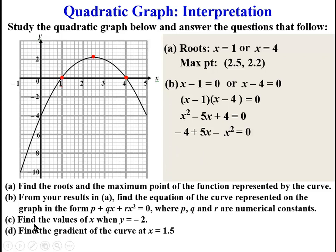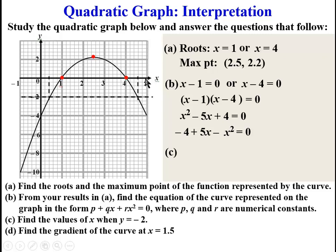So now we go to C: find the values of X when Y is negative 2. We go to the graph — this is Y equals negative 2. We draw a broken line there and find the point of intersection of the curve and the line Y equals negative 2. So we now look for the X coordinates of the points of intersection of the curve and the line Y is equal to negative 2.